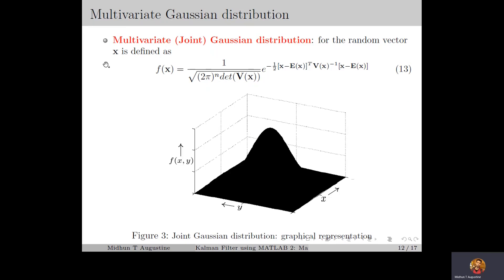Next we generalize the Gaussian distribution for the multivariable case. For the random vector x, the multivariate Gaussian distribution or joint Gaussian distribution can be defined using the probability density function given in equation number 30, which is a generalization of the univariate PDF to the n-dimensional case. For two random variables x and y you can have the joint Gaussian distribution as in figure 3, or in the case of a 2-dimensional random vector x with elements x1 and x2, the joint Gaussian distribution will look like this.